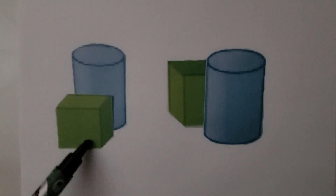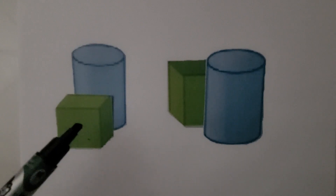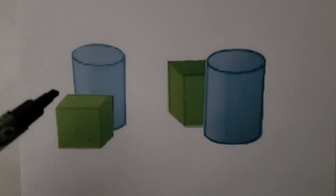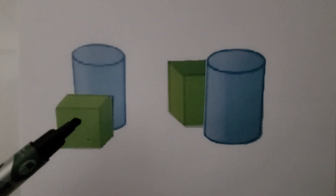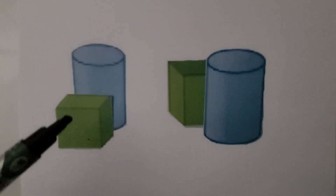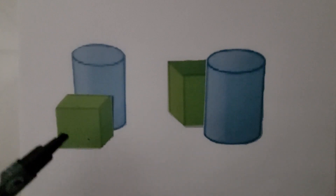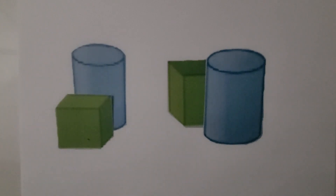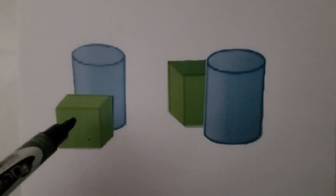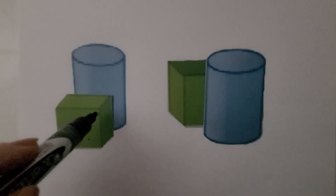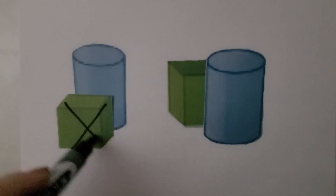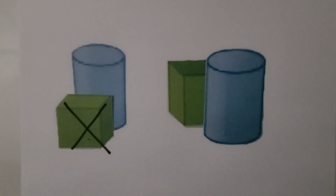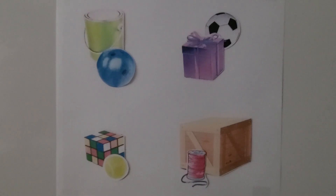If you said this one, you're right. This cube is in front of the cylinder — we can see all of the cube, but we can't see all of the cylinder. We need to put an X on that cube.